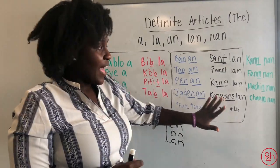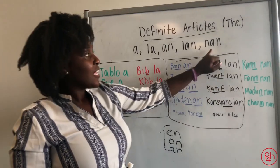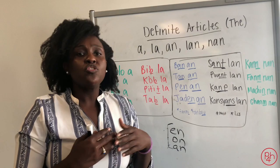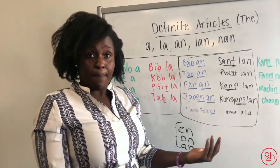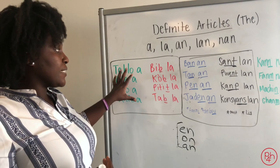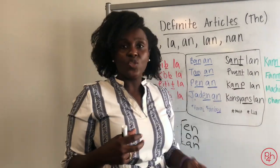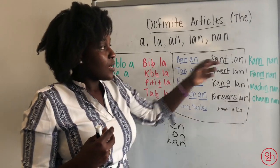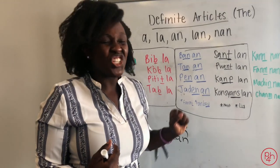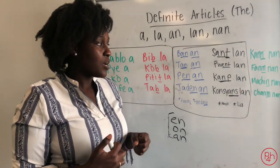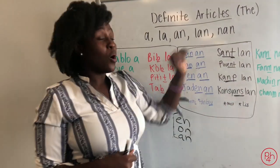The final definite article is na. You put na after a word that ends with an N or an M. Very simple — even though N and M are technically consonants, you still use na. Examples: kann-nan, the cane; fanm-nan, the woman; machin-nan, the car; chanm-nan, the room. If it ends with an M or an N, go ahead and put na.